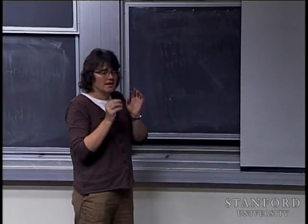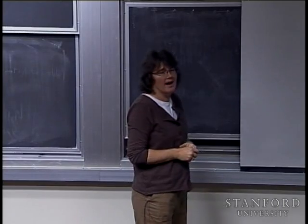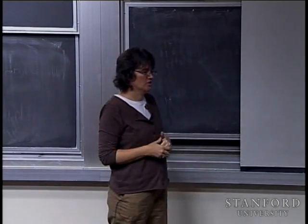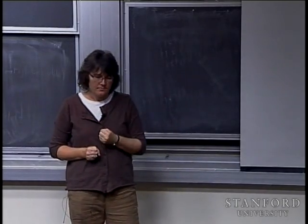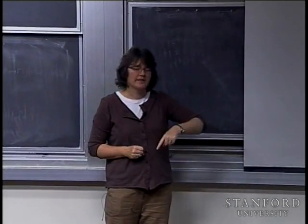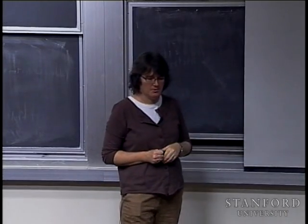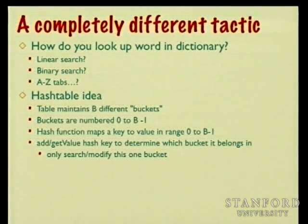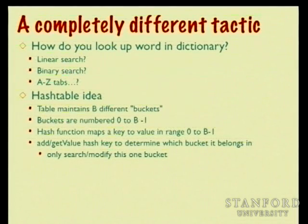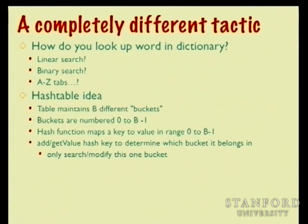The strategy for dividing into buckets is called the hash function. Given a key, it produces a number in the range zero to B-minus-one, where B is the number of buckets. That number is the hash value, telling you which bucket to look in to find a match for get-value, or where to place a new entry when adding to the table.